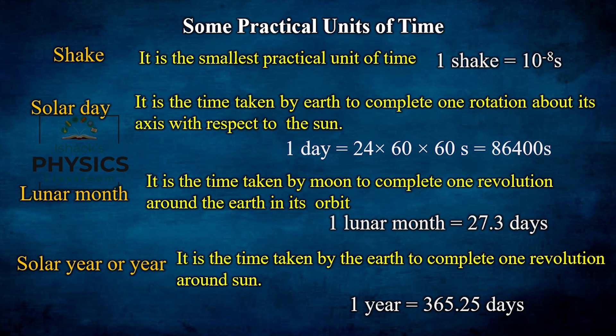These are the practical units of length, mass, and time. Remember the key values: light year, astronomical unit, parsec, metric ton, solar mass, atomic mass unit, Chandrasekhar limit, shake, solar day, lunar month, and solar year. I hope this concept is clear for you. Thank you for watching.